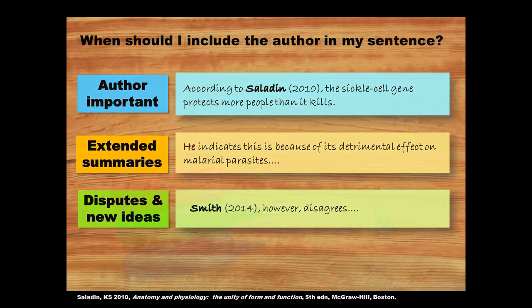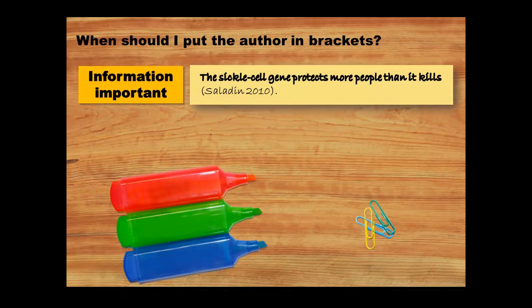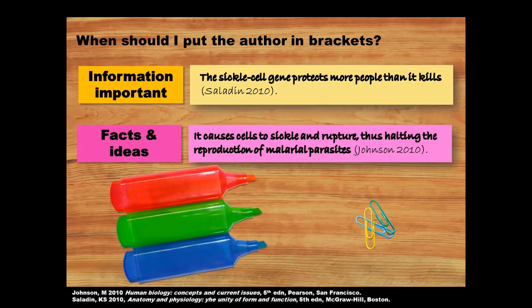What about the other style — the one with both the author's family name and the date within the brackets? I'd use this if the information was what I wanted to be important or prominent, and I'd use it for facts and ideas that are widely accepted or that I agree with. This information-prominent style is common in human biology as it focuses readers' attention on information, facts, and ideas.